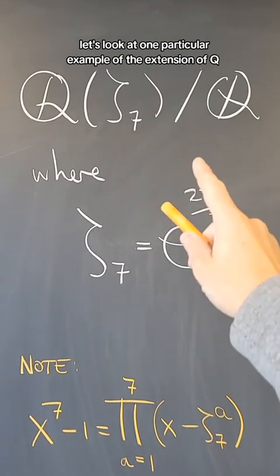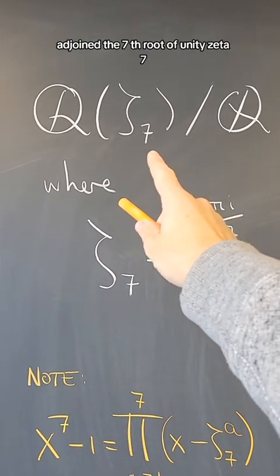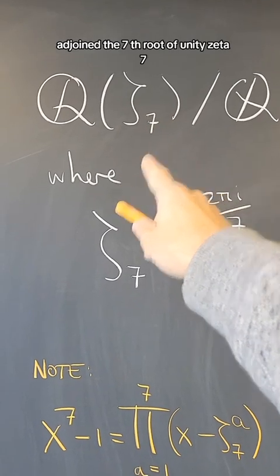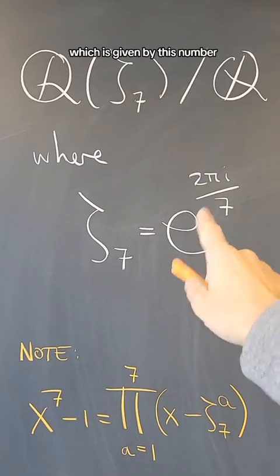Let's look at one particular example, the extension of Q adjoined the 7th root of unity, ζ₇, which is given by this number.